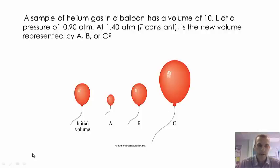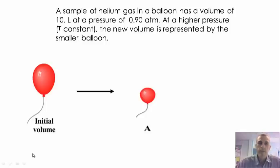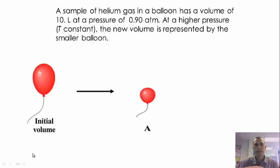If you wrote down letter A, you're correct. The sample of helium gas in a balloon has a volume of 10 liters at a pressure of 0.9. At a higher pressure, the new volume is represented by a smaller balloon. The pressure went from 0.9 up to 1.4, so a larger pressure means a smaller volume because there are more collisions in that smaller balloon.